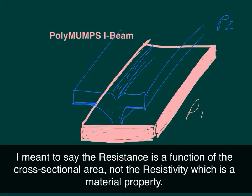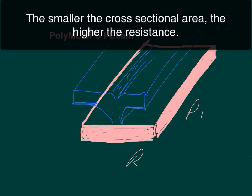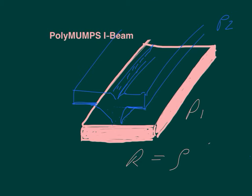So the smaller the cross sectional area, the higher the resistivity. If you remember, it was resistance equals resistivity L over A. I think I used beta as the resistivity in the other lecture. So we've got a material property called resistivity times L, the length, over the cross sectional area, which is this part here. So this is the cross sectional area right here.